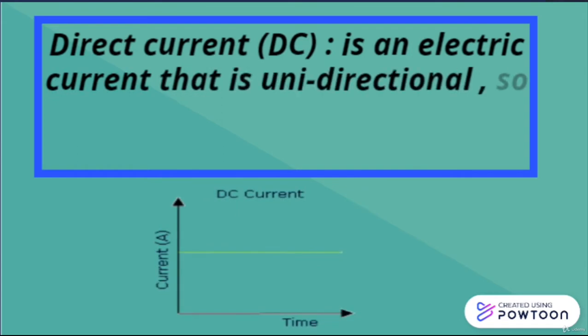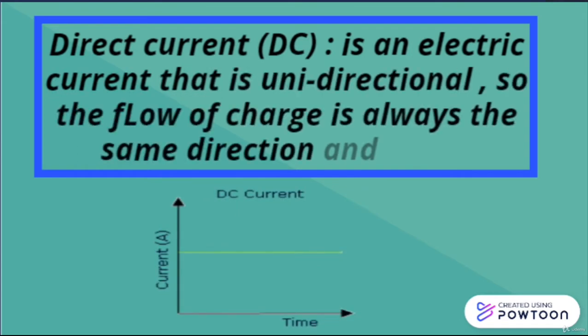Direct current, stands for DC, is an electric current that is unidirectional, so the flow of charge is always the same direction and value, which means that the value of the current is still the same over time, it doesn't change at all.